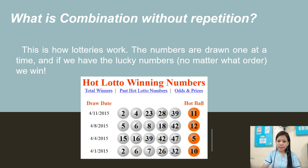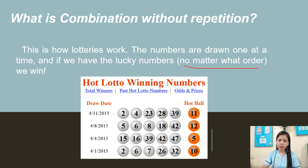What is combination without repetition? This is how lotteries work. The numbers are drawn one at a time, and if we have the lucky numbers, no matter what order, we win. So an example for this is 2, 4, 23, 28, and 39 — there is no repetition of numbers.